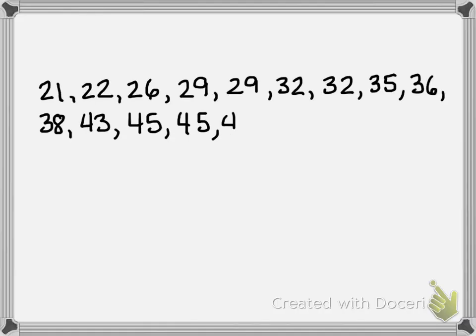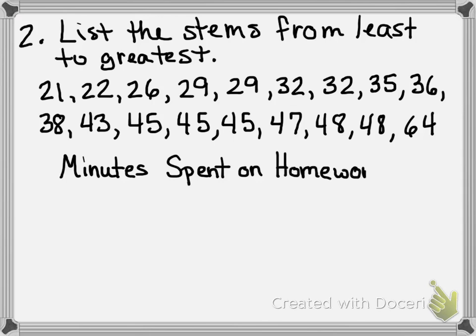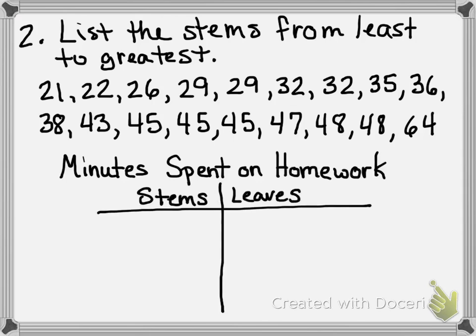Here I have my numbers listed in order from least to greatest. Step two: list the stems from least to greatest. I'm going to create my two columns, put a title on it — 'minutes spent on homework' — stems on one side, leaves on the other. I've got some twos, some threes, fours, and a six. I'm going to include the number five in my stems column even though I don't have any data starting with five, to keep the numbers in order and show that there's no data for that range.